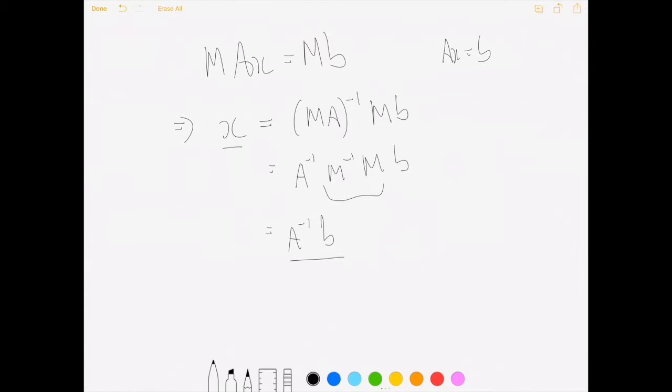So in Gaussian elimination, we apply this result, we apply this result where the matrices M, which we multiply both sides of the equation are elementary matrices, which perform row operations on A.